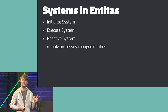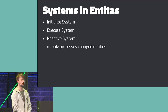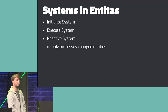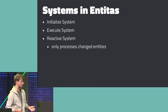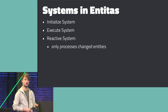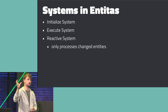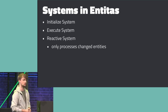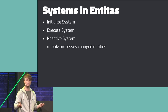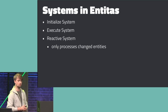In Entitas, there are three different types of systems. We just saw the execute system — the velocity example — which runs every frame. We also have an initialize system, intended to run just once at the beginning. And we have something rather unique to Entitas: the reactive system. The cool thing about reactive systems is they only process entities that have actually changed. Imagine a render view system updating a game object's transform based on position — if you have thousands of entities but only 10 changed position, you only need to update those 10. That's exactly when you use a reactive system.